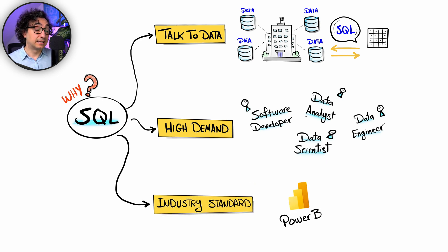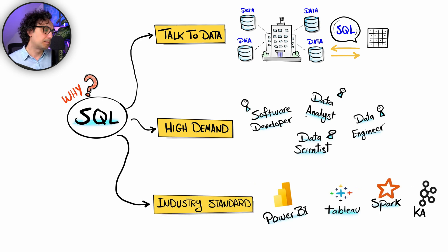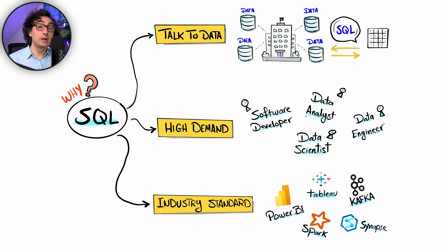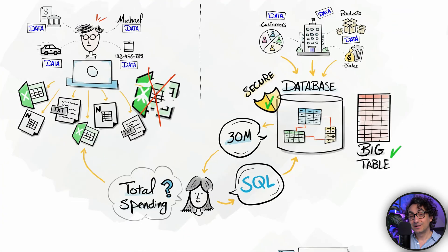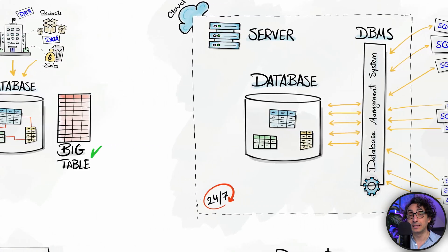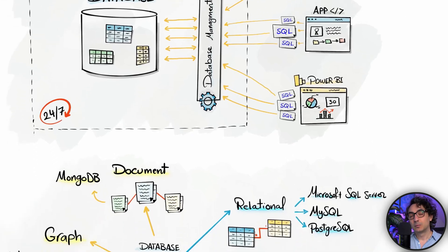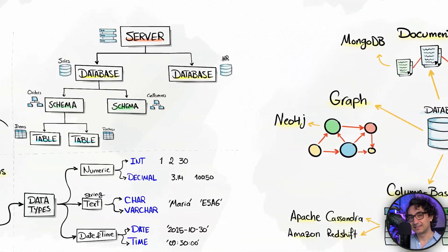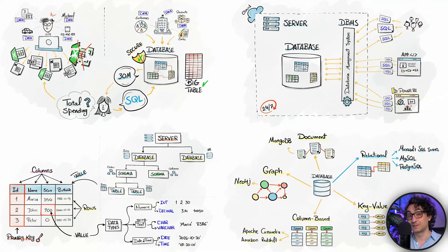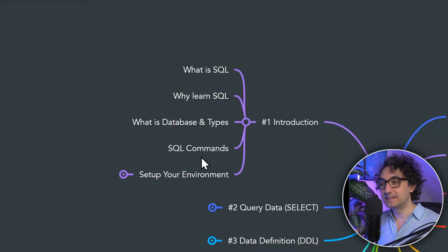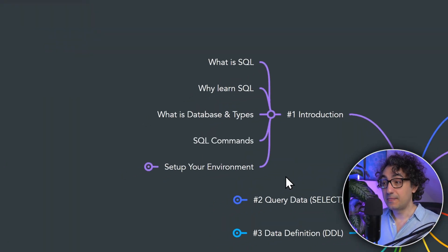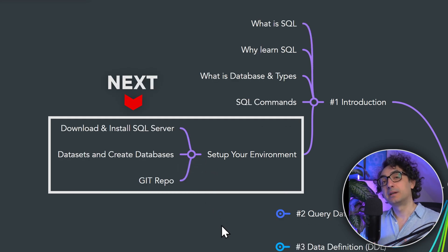Third, SQL is an industry standard. Modern data platforms and tools like Power BI, Tableau, Kafka, Spark, and Synapse all have a section where you enter SQL code. Most vendors adopt SQL because it is widely used and a standard. Those are the top three reasons why SQL is still relevant and why you have to learn it. We now have a clear understanding of what SQL is, why we need it, what databases are and their different types, why we have DBMS and servers, and how things are organized inside databases. In the next step we will set up our environment — preparing your PC with the data, databases, and all the tools needed to learn SQL.